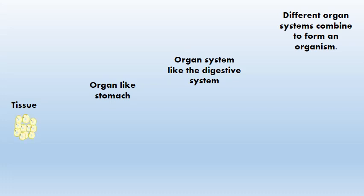A group of similar cells that perform a specific function join together to form a tissue. Different types of tissues join together to form an organ, like stomach.